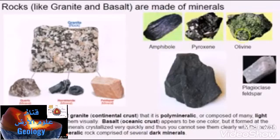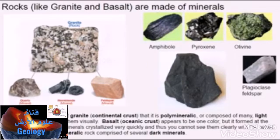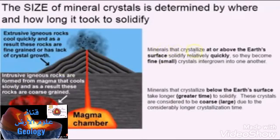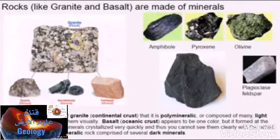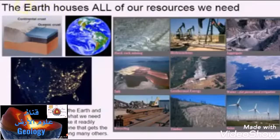The dark minerals in basalt include amphibole, pyroxene, olivine, and plagioclase feldspar. Granite formed and crystallized at depth, whereas basalt crystallized at or near the earth's surface — relatively quickly. Minerals that crystallize above the surface have very small or fine crystals, while those that crystallize at depth have considerably more time and are coarse-grained.